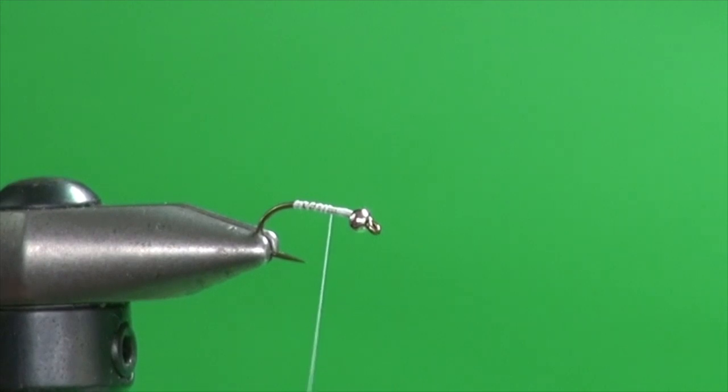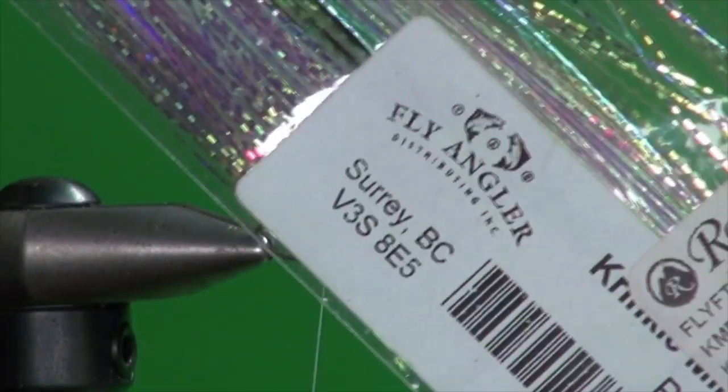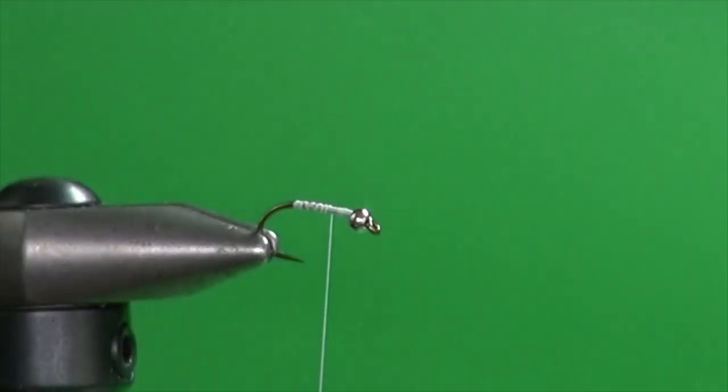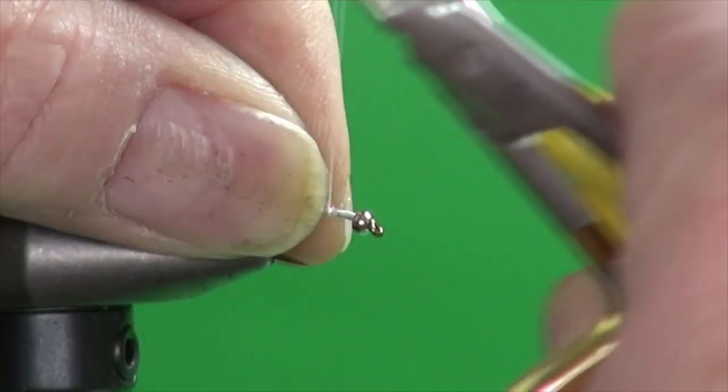And the butt section, you could use silver mylar but I love using this crinkle mirror flash. It's got that nice sort of mirage opal pearl color and really catches the light well. So I'm taking two strands and we're just going to tie them in.